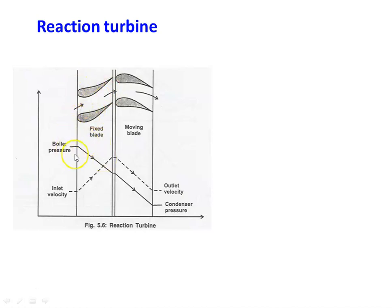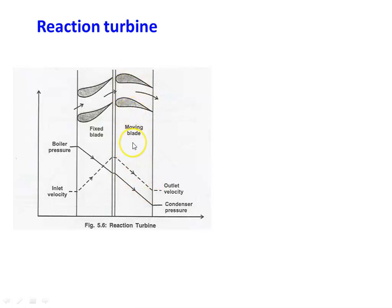For the pressure: pressure drop takes place in the fixed blade and in the moving blade. For this pressure drop, there is an increase in velocity, and this velocity is used in the moving blade. In the moving blade, there is a decrease in pressure as well as a decrease in velocity — both are happening. The power produced by the moving blade is the sum of the power produced due to decrease in velocity and decrease in pressure. That is the reaction turbine.